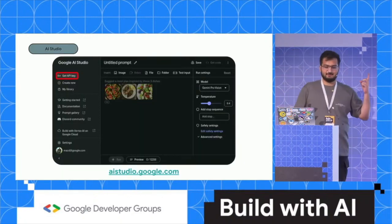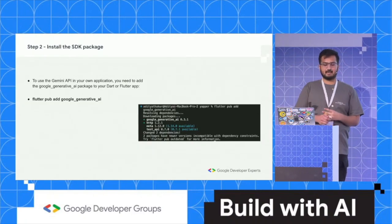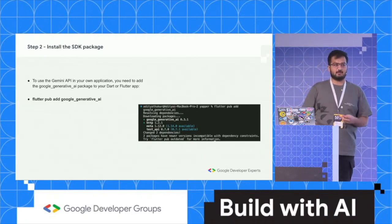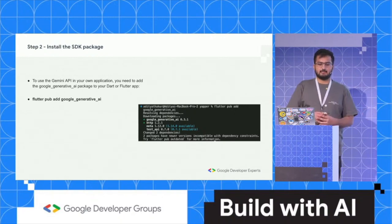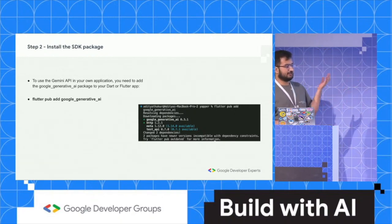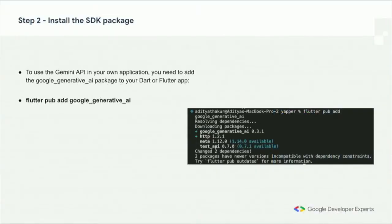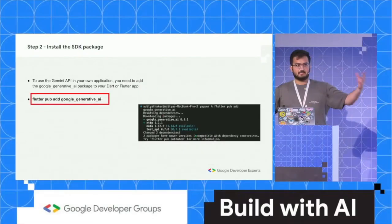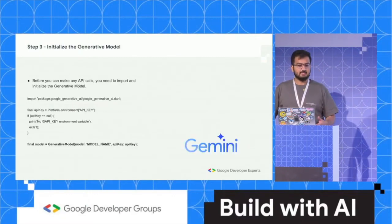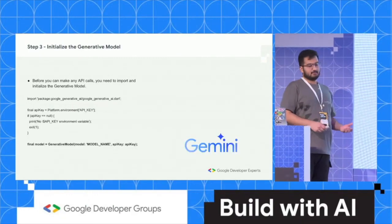The second step is to install a package. When working with Flutter, we have pub.dev which has over 50,000 packages. It has a lot of community support built-in, and the Flutter Google Generative AI SDK is available there. It takes some time — it would add a bunch of files to your project — but once you have done that, you can get started using the generative model inside your application.